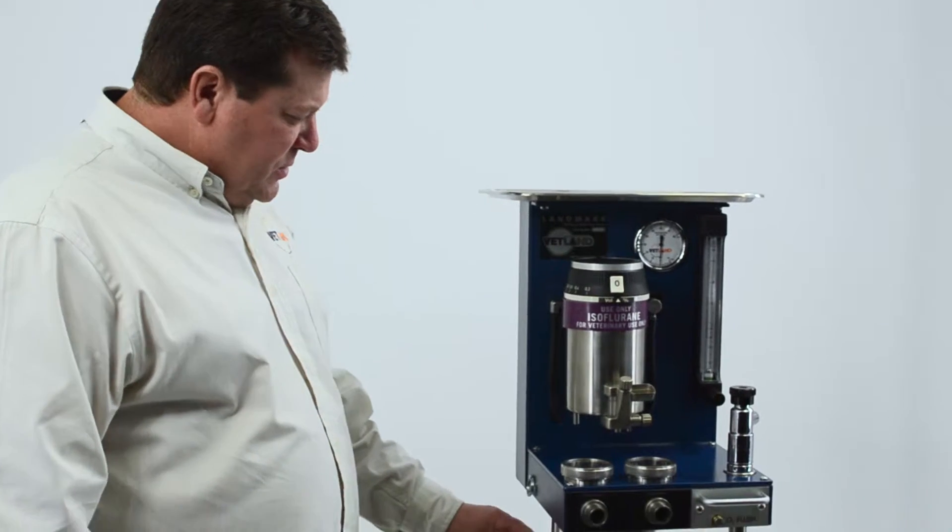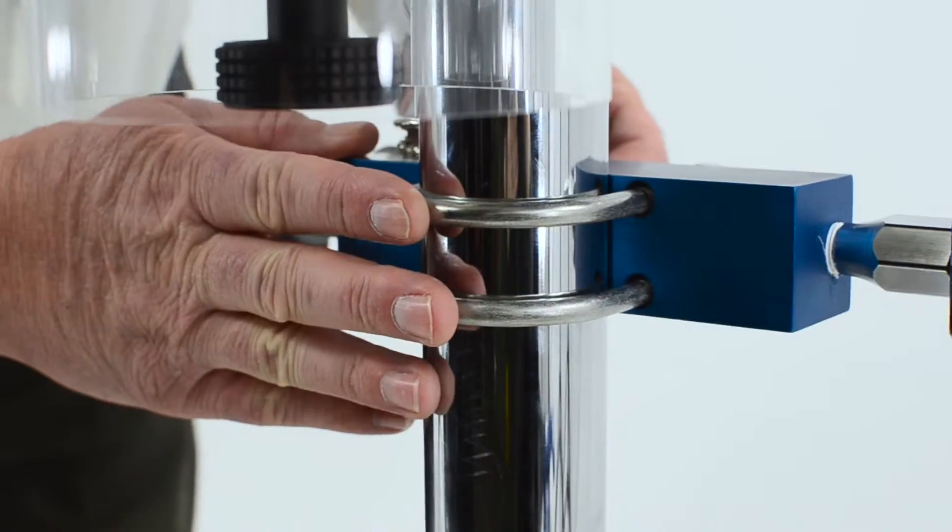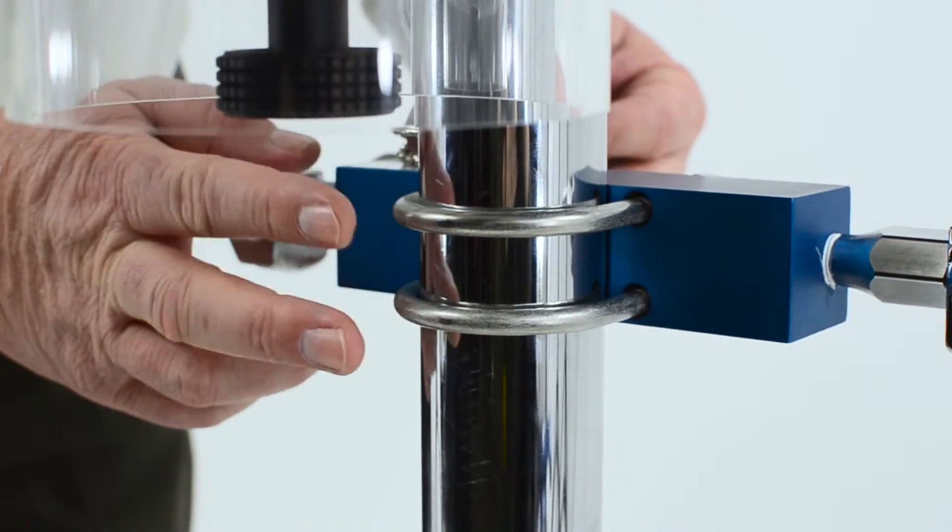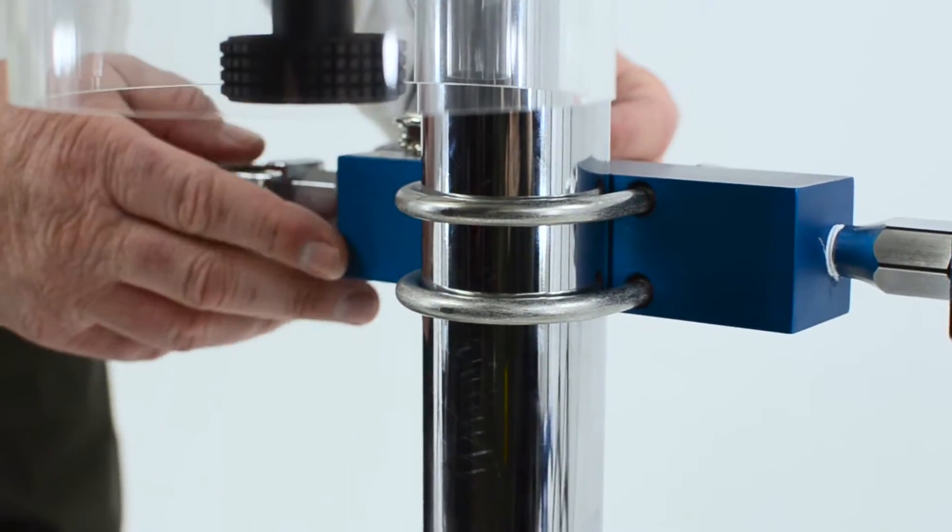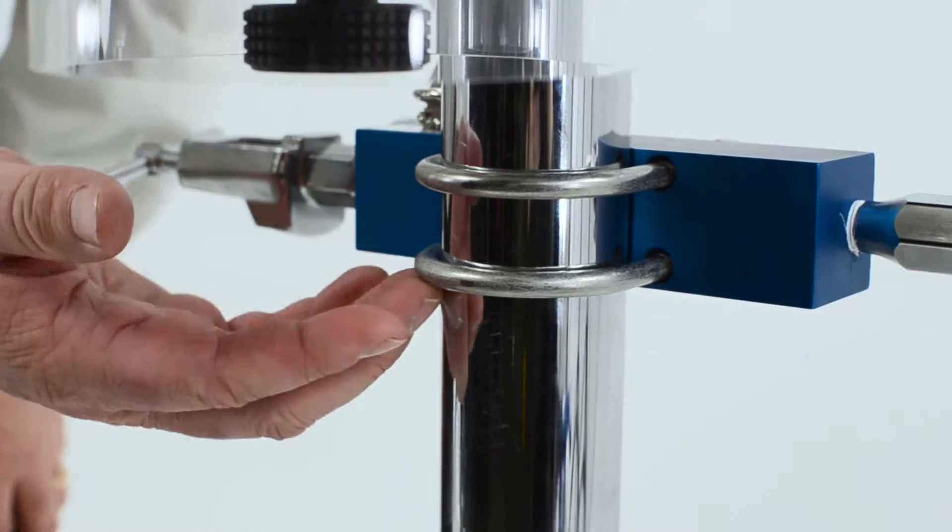The first thing you'll do is clamp the two U-bolts of the E-tank manifold to the pole. The best height would be 26 and a half inches from the base to the bottom U-bolt.